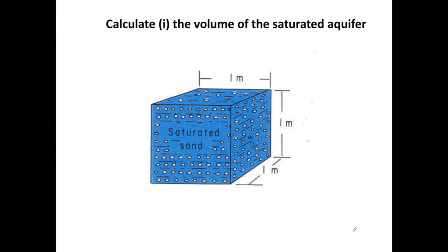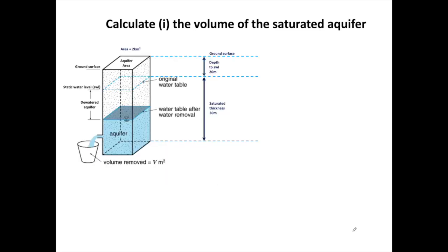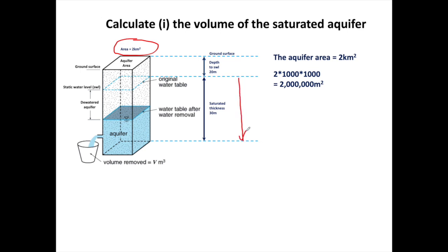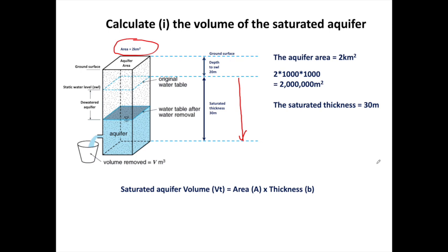Let's look at our first question, which is to calculate the volume of the saturated aquifer — that means the total volume of all the sand, gravels, and water below the water table. The area is 2 square kilometers, which makes 2 million square meters. The saturated thickness from the water table to the bottom of the aquifer is 30 meters. So the total volume is 2 million square meters times 30 meters, which makes 60 million cubic meters.